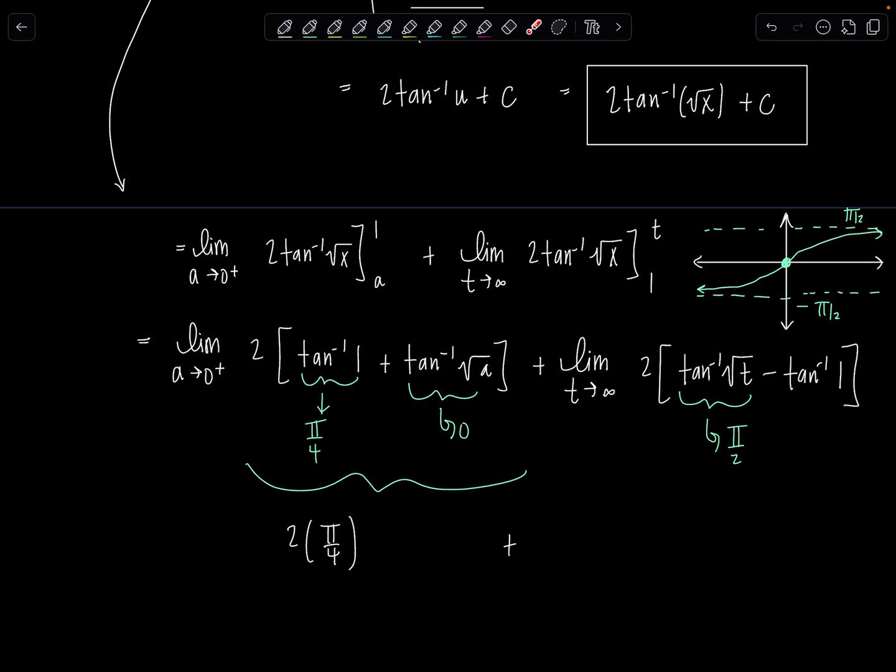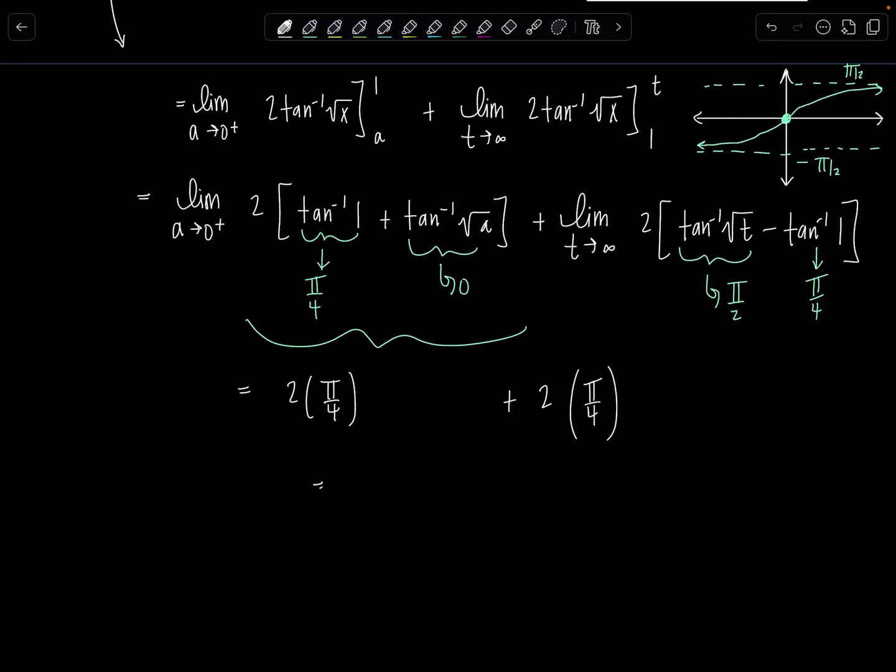T approaches infinity, tan inverse is going to pi over two. Minus tan inverse of one, we just talked about it, pi over four. So then this limit is two times pi over two minus pi over four. That's pi over four. Oh, look at that. Two constants. So beautiful. This is pi over two plus another pi over two, which is pi. So the limit exists as a finite number, which means this improper integral is convergent or it converges.